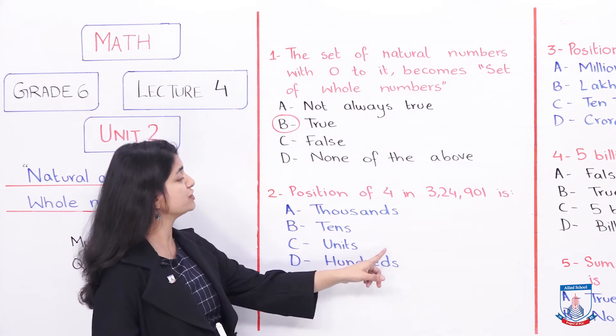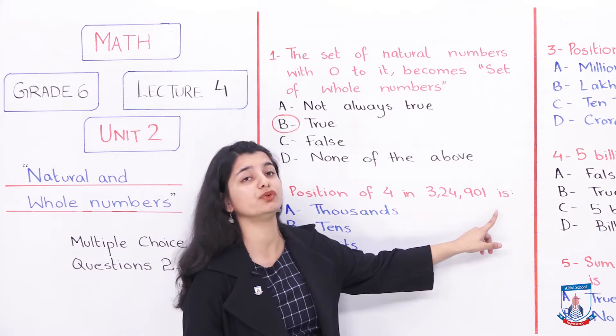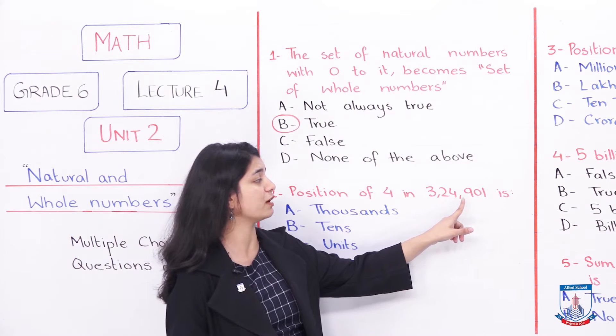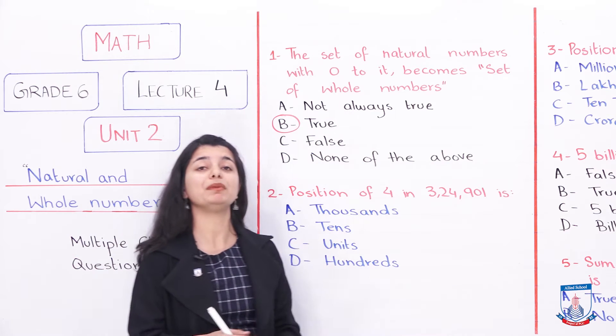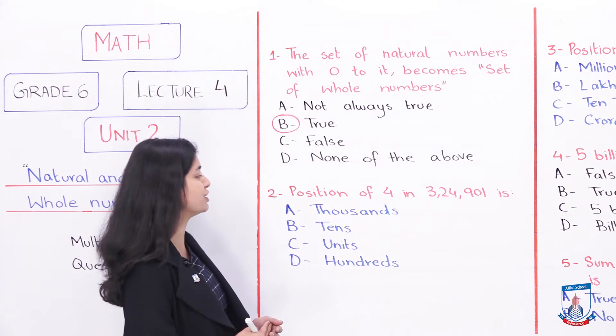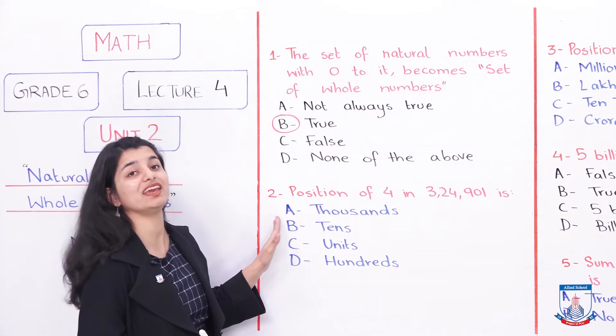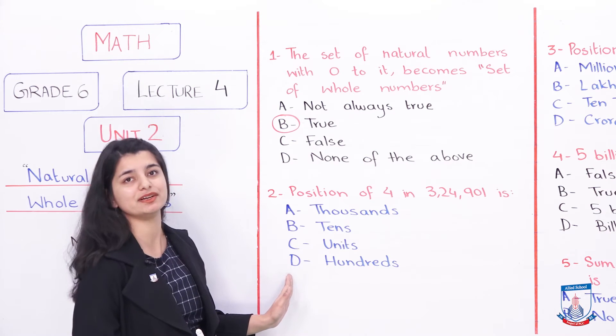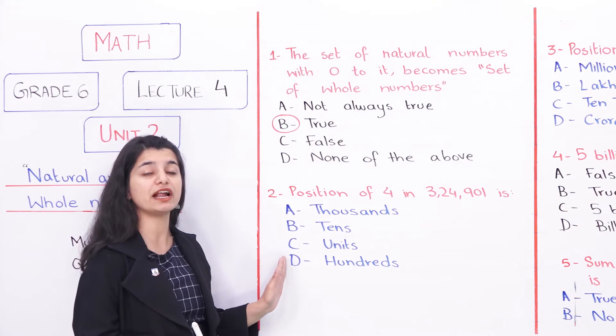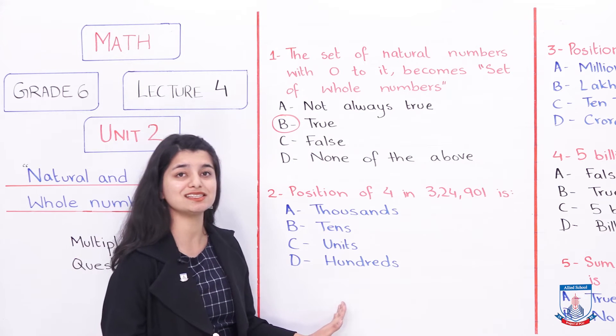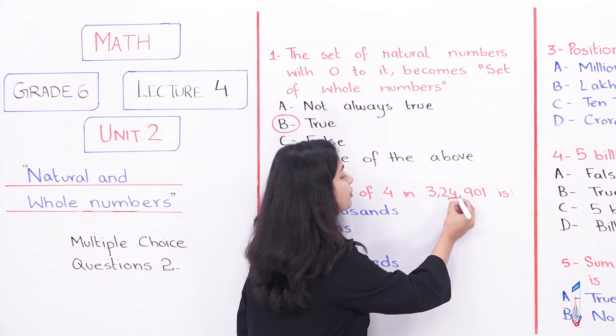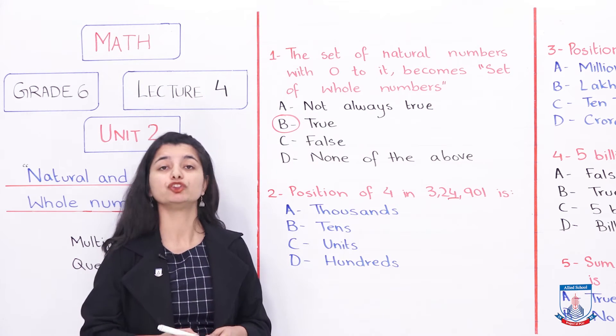The position of 4 in 324,901: they have given you a number which is 324,901. You have to tell us what is the position of 4. The options are A: thousands, B: tens, C: units, D: hundreds. Both the Pakistani system and the international system are the same. You have to tell what is the position of 4.